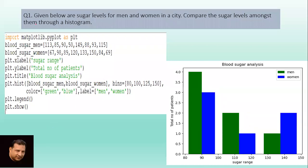One question is from a book. Given below are sugar levels for men and women, and you have to create a histogram. Import matplotlib.pyplot as plt. Blood sugar men and blood sugar women - we have taken some random values. Then plt.xlabel 'sugar range', so this will be displayed at the bottom. plt.ylabel 'total number of patients' is displayed on y-axis. This is your title.